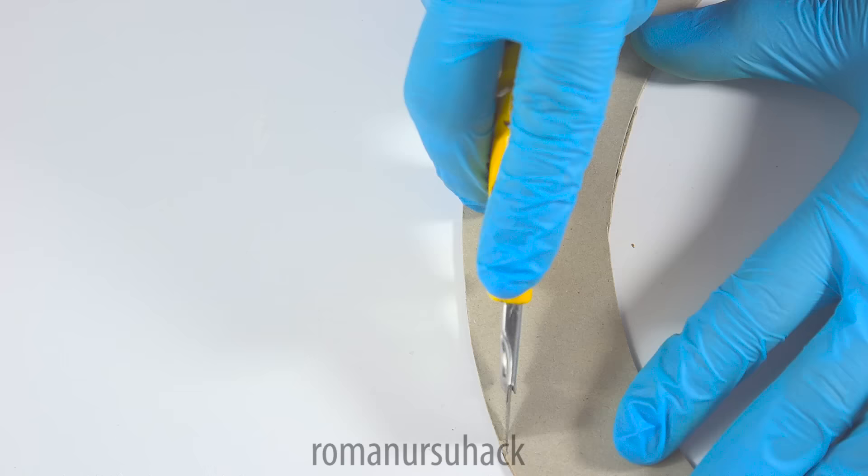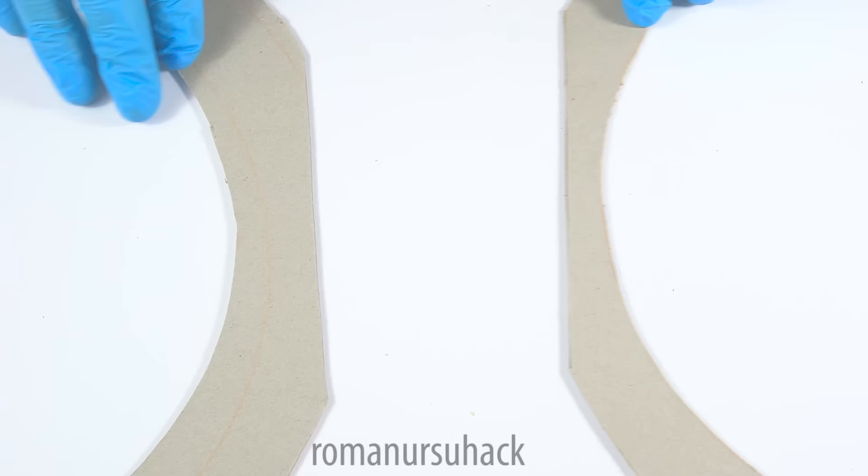For the parts to stay firmly on the base, take one of the walls and put it on the circular part. Make a line and then cut.